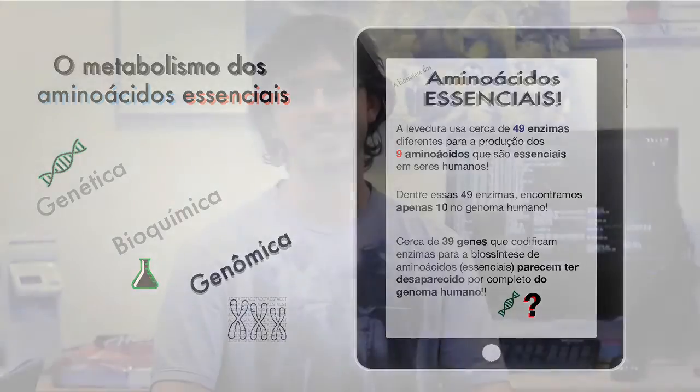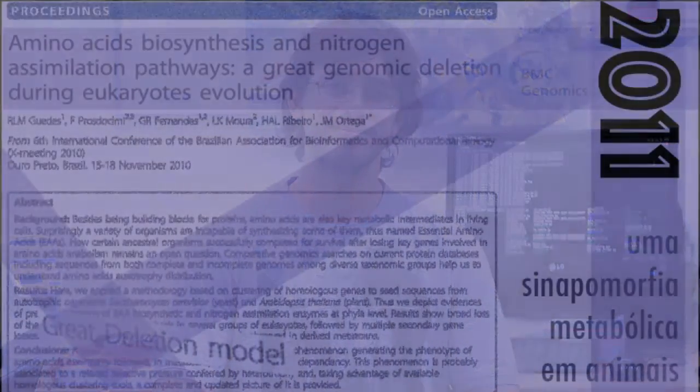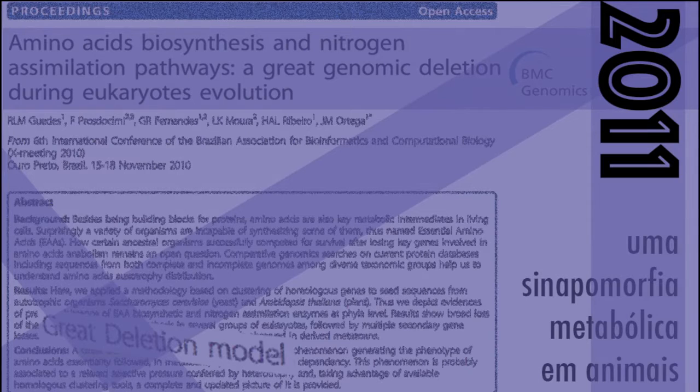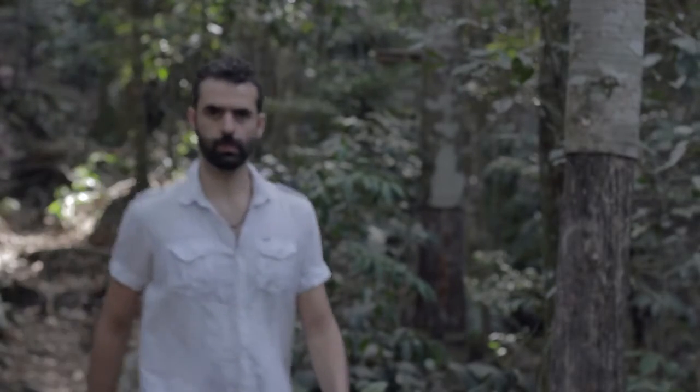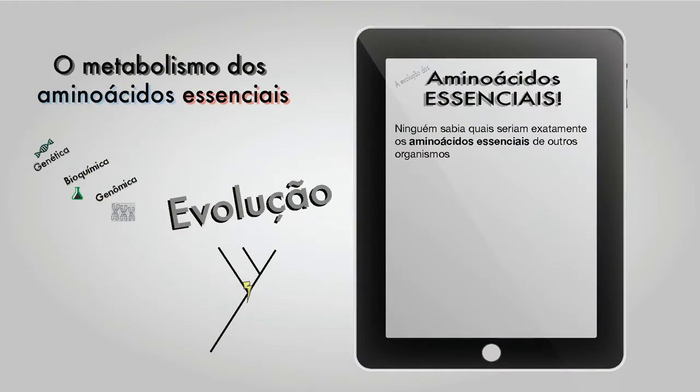Mas a gente ainda não sabia se isso teria acontecido com os animais. Até então, ninguém parecia haver se perguntado quais seriam os aminoácidos essenciais presentes nos pássaros, nos lagartos, nas estrelas do mar, nos insetos e em outros organismos. Ou seja, ninguém sabia como a característica de ter aminoácidos essenciais havia evoluído. Assim, uma questão evolutiva interessantíssima estava em aberto, e nós, como biólogos, bioquímicos e evolucionistas, estávamos bastante interessados em ir mais fundo nessa questão.